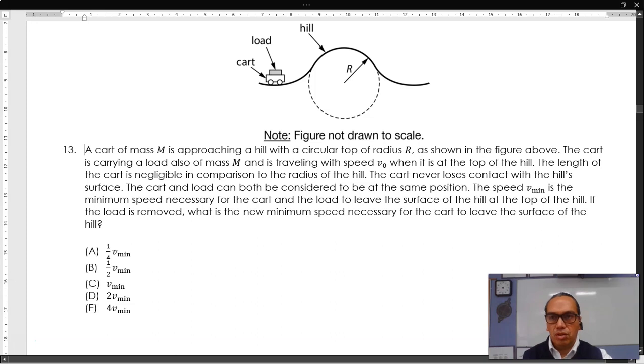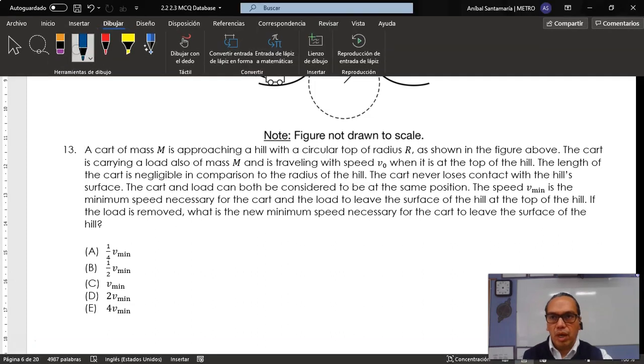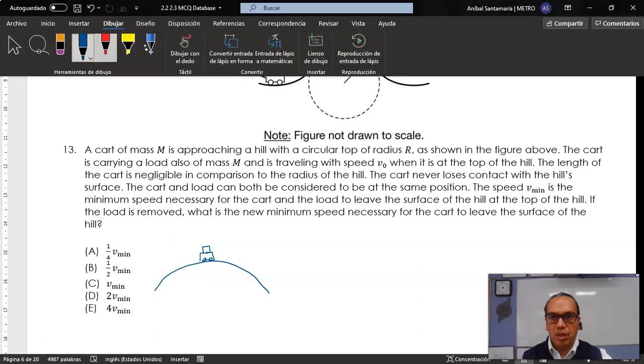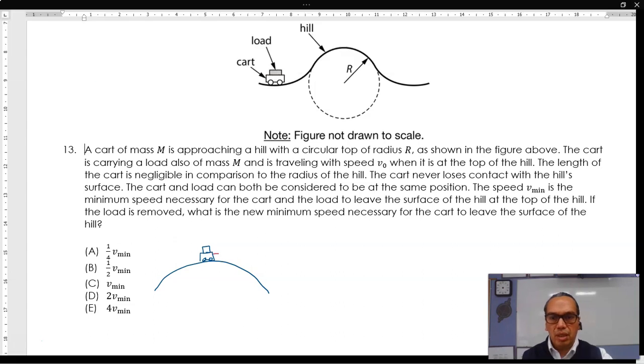Let us first consider what is going to happen if the two objects, the cart and the load, are together. Given that you want some consideration for the minimum velocity, we might think what is going to happen when that speed is less than the minimum.